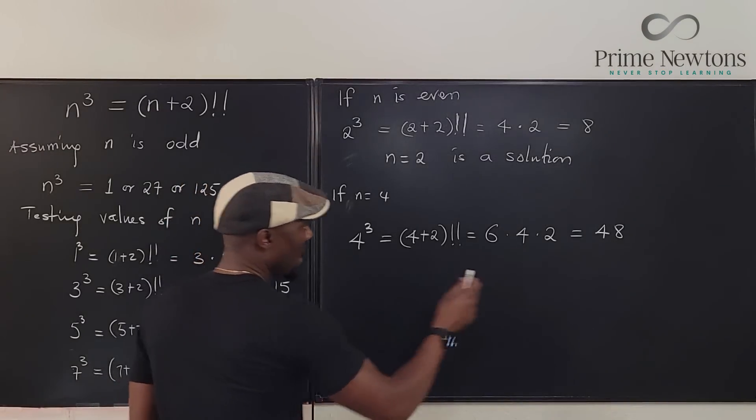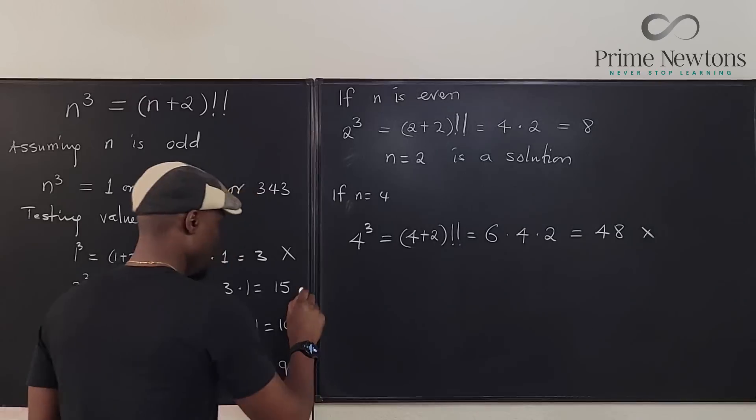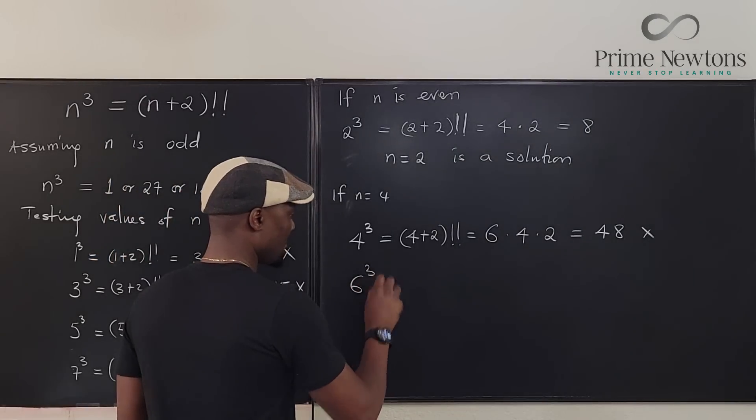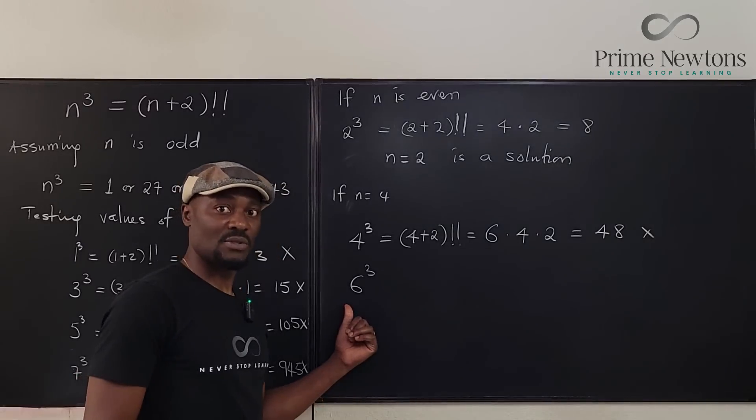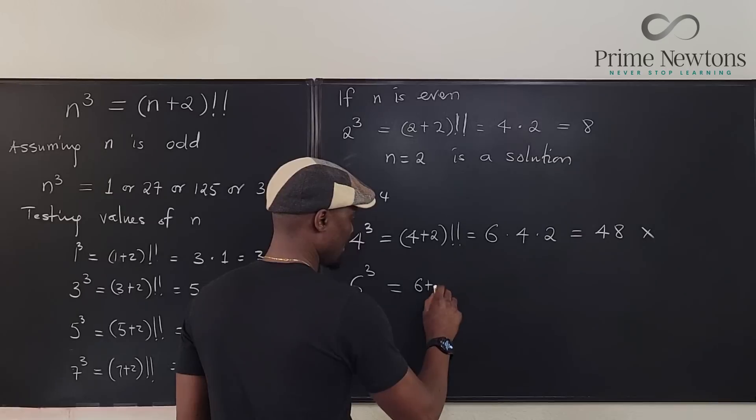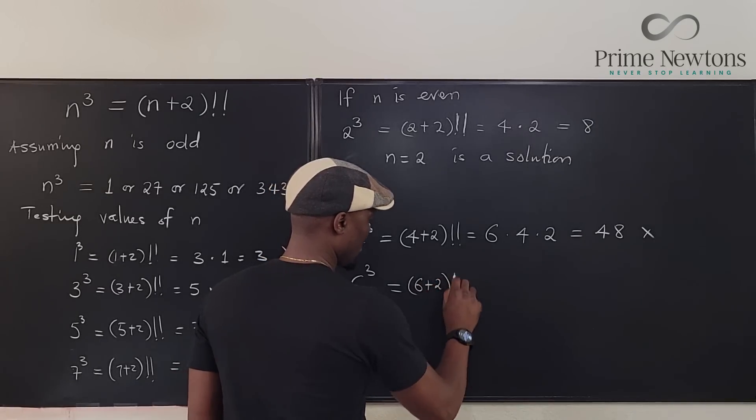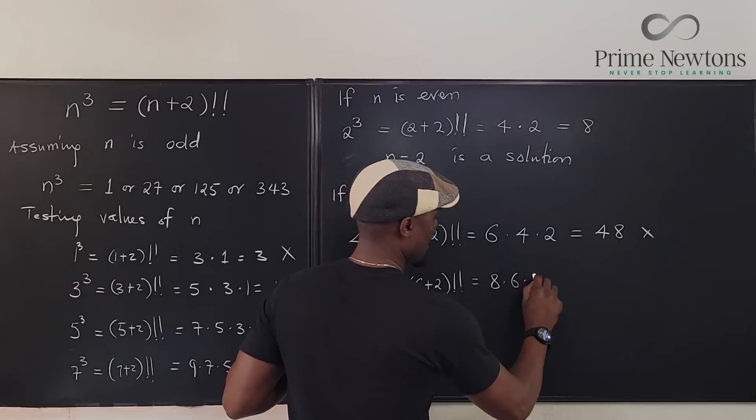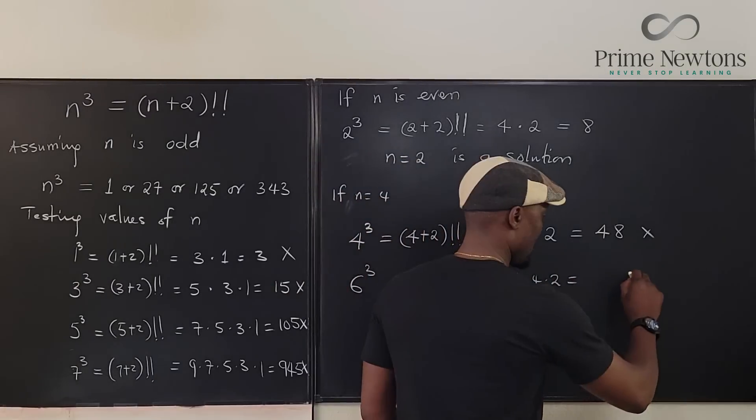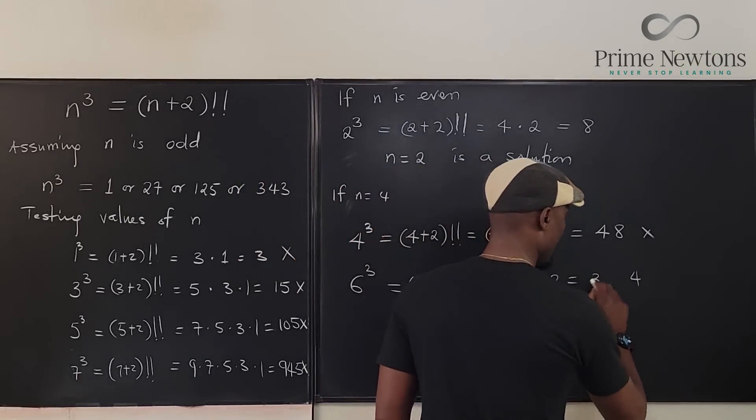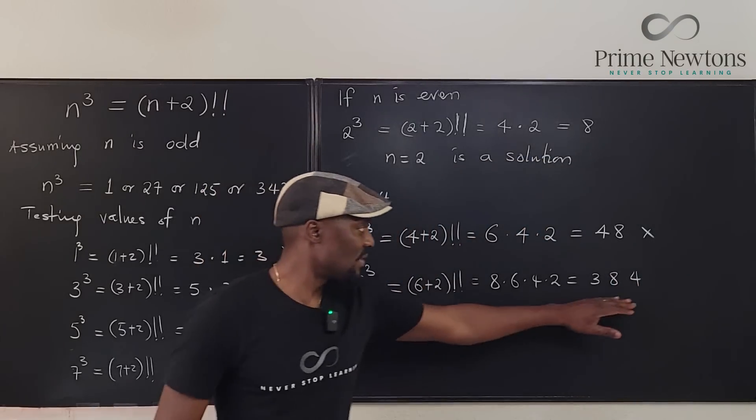So we go, so no, this is a no. Hey, we didn't say no here. Everything here is a no. They're not equal. So let's do 6 cubed. 6 cubed is 6 times 6 times 6, which is 216. Let's go here. This is going to be 6 plus 2 double factorial, which is going to be 8 times 6 times 4 times 2. And what would that be? 6 times 6 is 36, 38, 38, 384. I hope that's correct. So this is 384. This is 216.